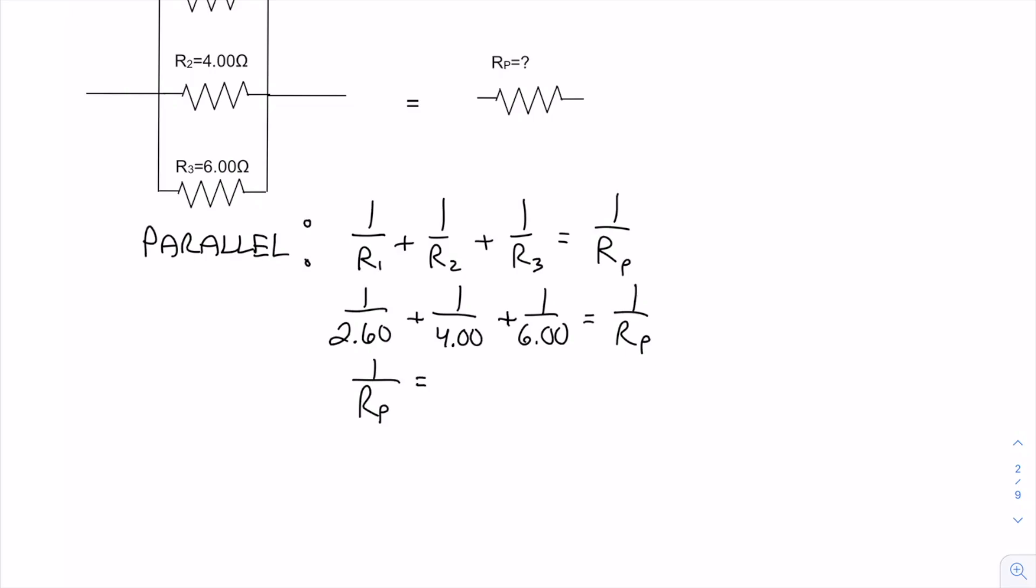Now here's where a big mistake happens with students, because a lot of people will go, oh the equivalent resistance is 0.801 ohms. But remember we have to redo the inverse in order to solve for RP. So we're going to need to take the one over this number to find RP, which gives us a final equivalent resistance of 1.248 ohms.